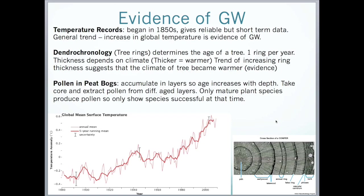We use dendrochronology to figure out how old trees are by using tree rings, which are formed within the trunk as the tree grows. Most trees produce one ring per year, and the thickness of the ring depends on the climate — the warmer the climate, the thicker the ring. I have a picture of tree rings here. From analysing the thickness, we can conclude there is a trend of increasing ring thickness, which suggests the climate was warming and is evidence of global warming.